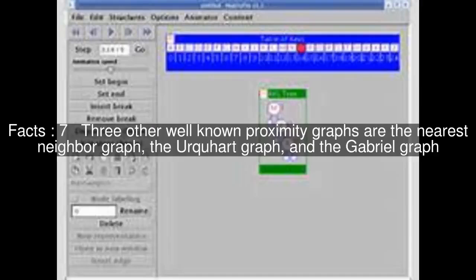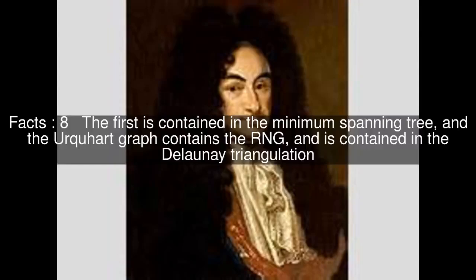Three other well-known proximity graphs are the nearest neighbor graph, the Urquhart graph, and the Gabriel graph. The first is contained in the minimum spanning tree, the Urquhart graph contains the RNG and is contained in the Delaunay triangulation. Since all these graphs are nested together, they are referred to as the Toussaint hierarchy.